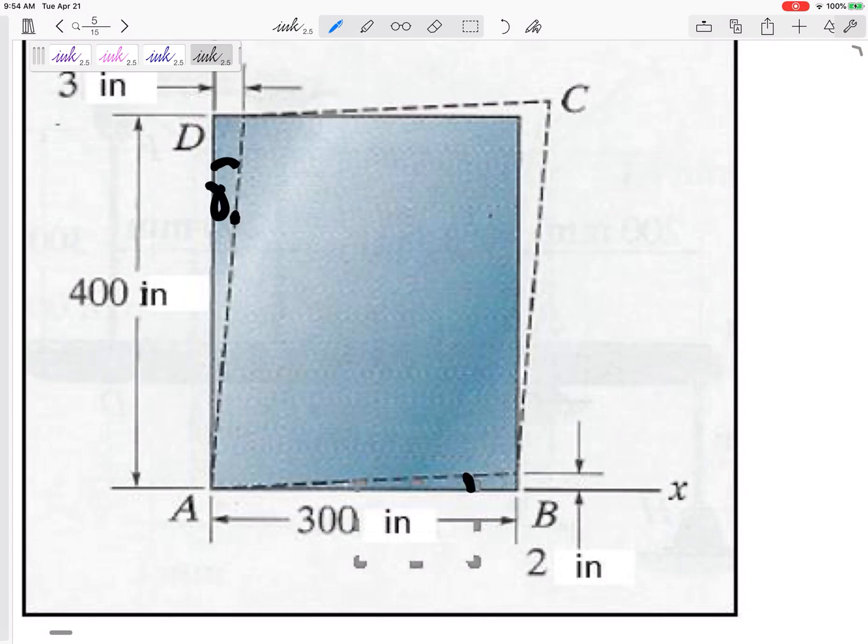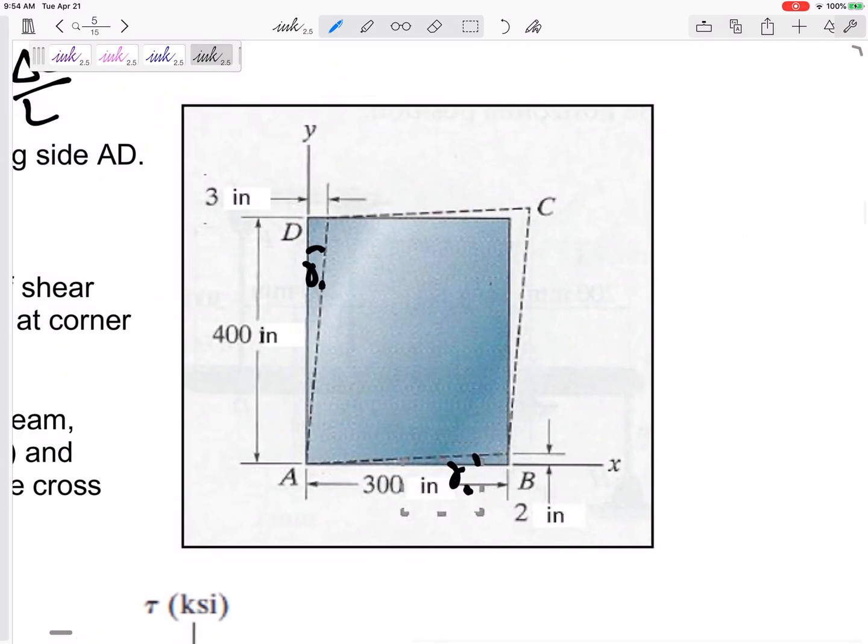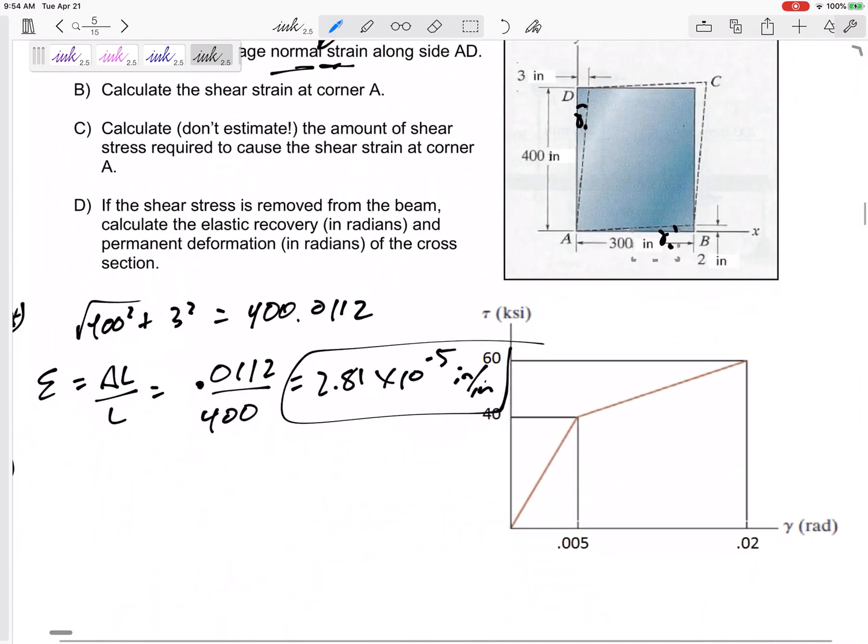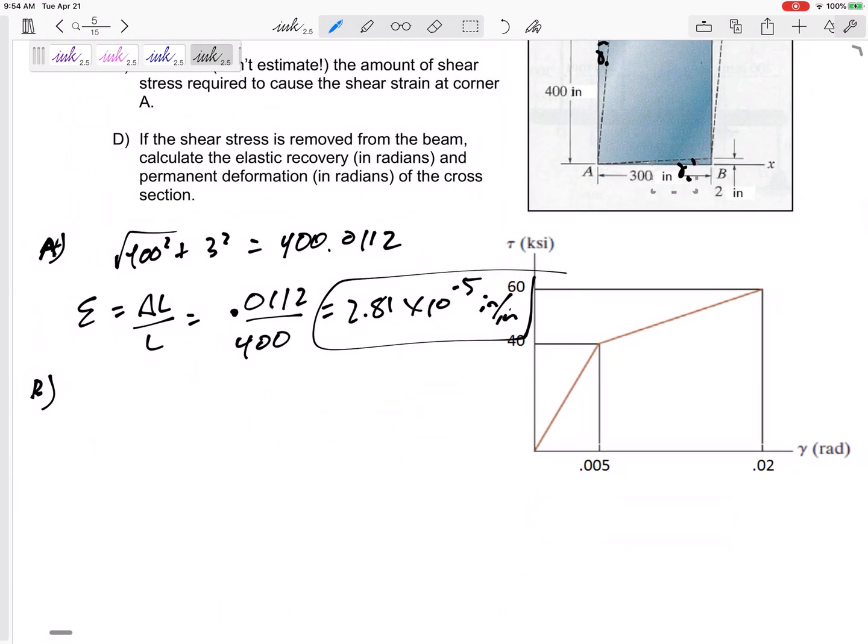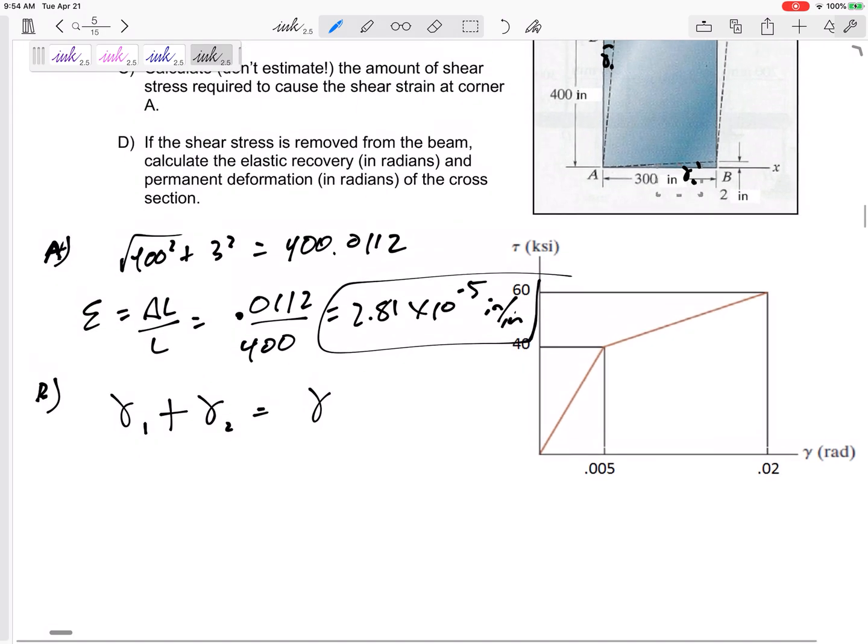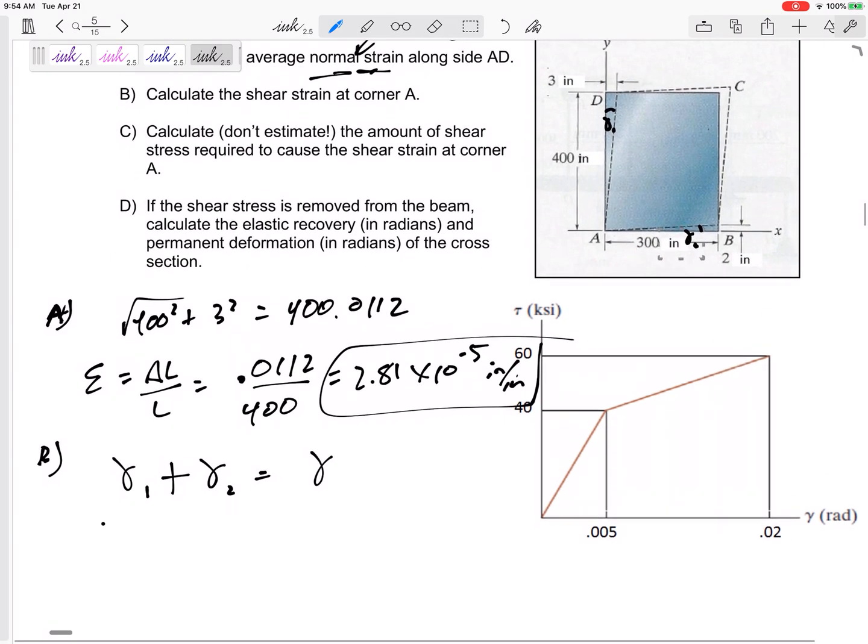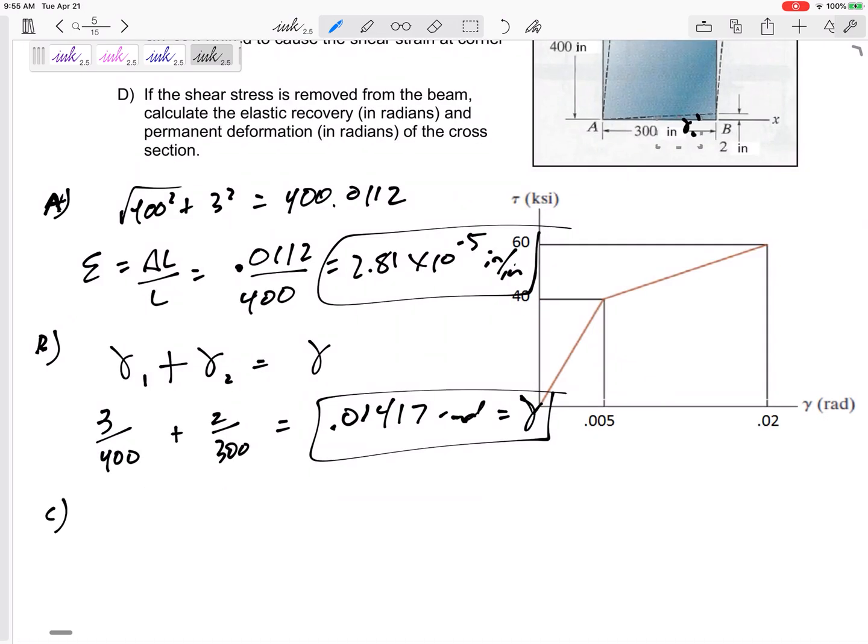Let me call this gamma 1 and gamma 2. Let's see, I could do tangent, but remember these are small angles. We can use a small angle approximation. So both of these are positive. That will add up to my strain. Gamma 1, look at that, is 3 over 400. Gamma 2, 2 over 300. 0.01417 radians is my shear strain. Is my shear strain.